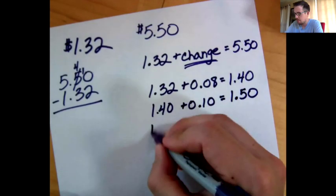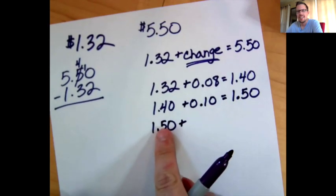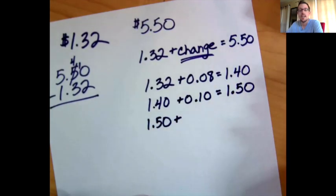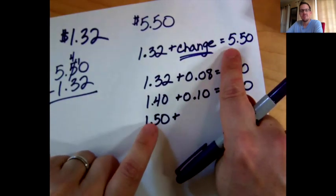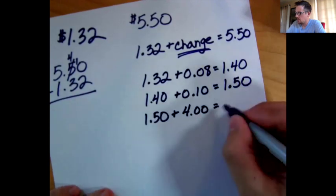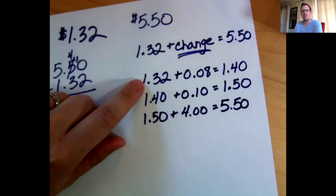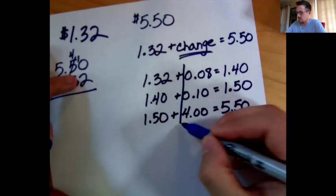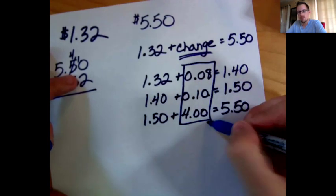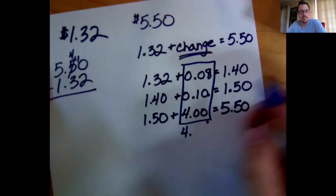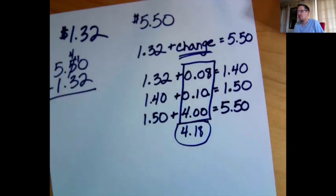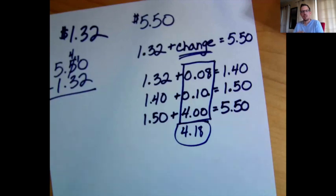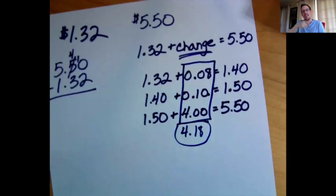I'm still not at 5.50, but I'm very close — they both end in 50 cents. So I need to add more to get from one dollar 50 to five dollars 50. That's four dollars. One dollar 50 plus four dollars is five dollars and 50 cents. So I started at one dollar 32, added eight cents, ten cents, and four dollars. The question is how much did I add total: eight cents plus ten cents plus four dollars is four dollars and 18 cents.